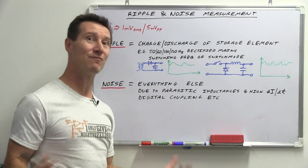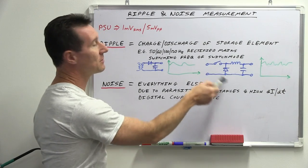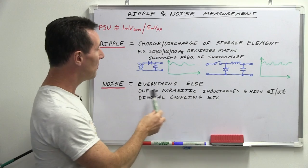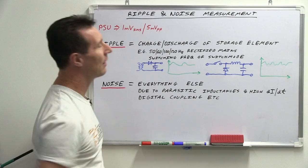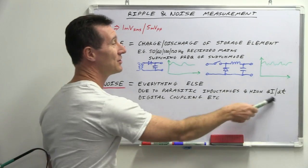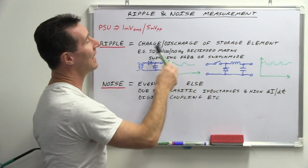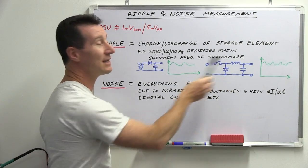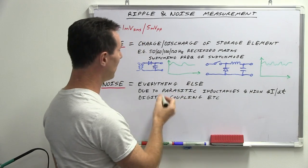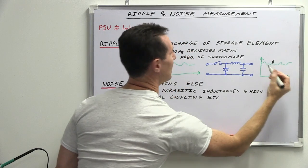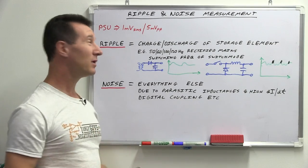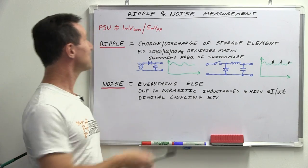What is noise? Noise is everything else. In a switch mode power supply you can get parasitic inductances all over the place, which can cause high-frequency noise or ringing when you have large dI/dt - large changes in current over time - which you get charging and discharging your storage element. These parasitic inductances have much lower inductive values, so they ring and generate noise at a higher frequency. You'll see much higher frequency content superimposed on the waveform.